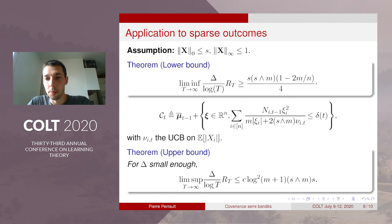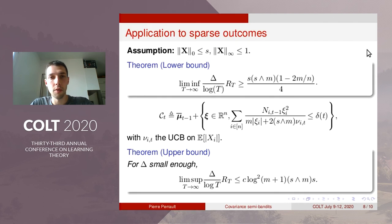And for the upper bound we consider a slightly different confidence region that depends on this quantity that is a UCB on this expectation. And actually this quantity replaces the covariance quantity. And you can notice that thanks to this assumption the sum of this mu_i sums to s. So for this region applying the same analysis we get this kind of upper bound.